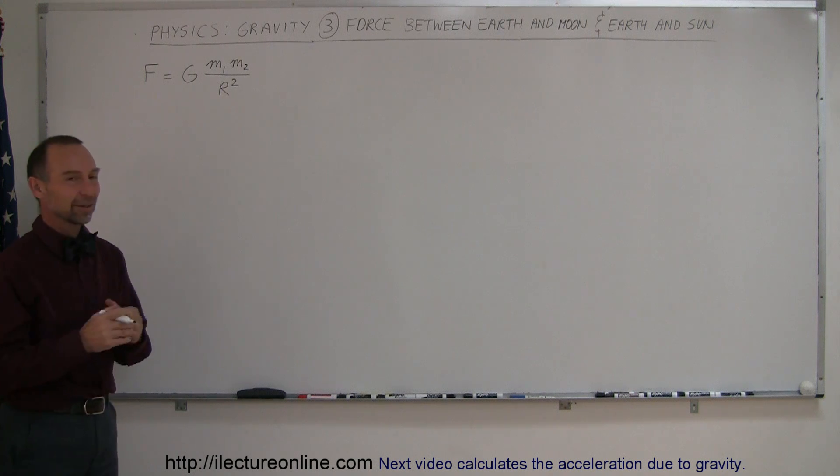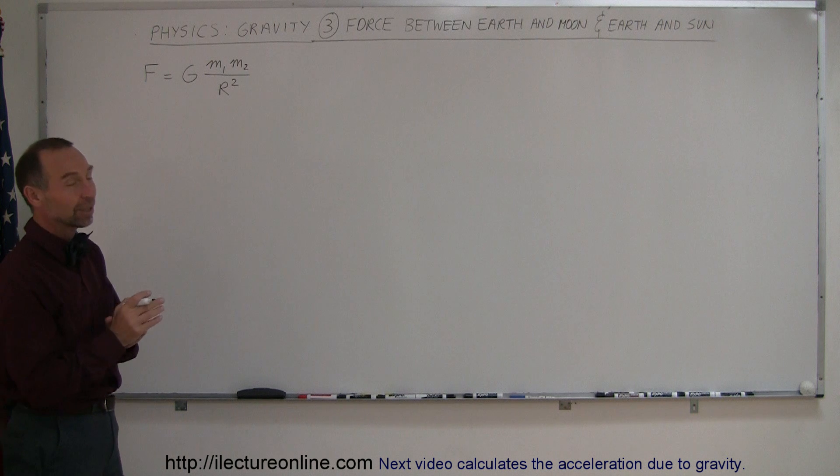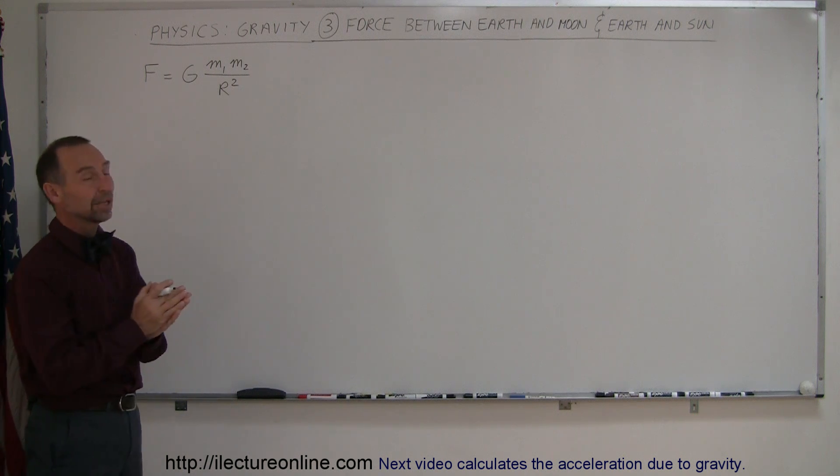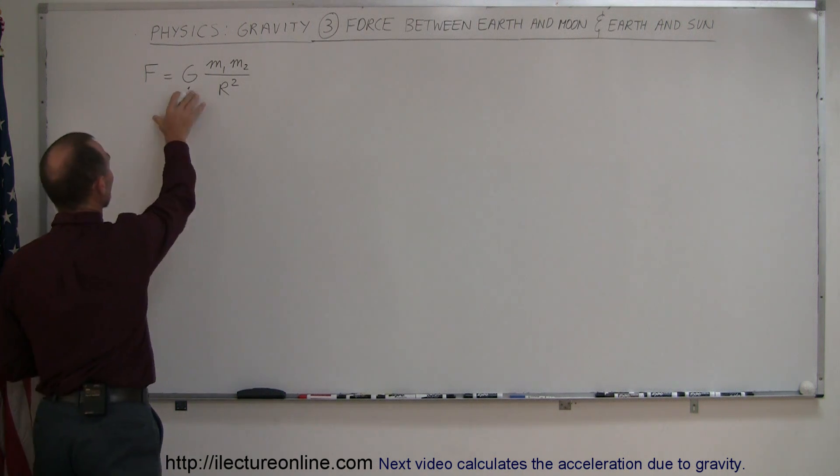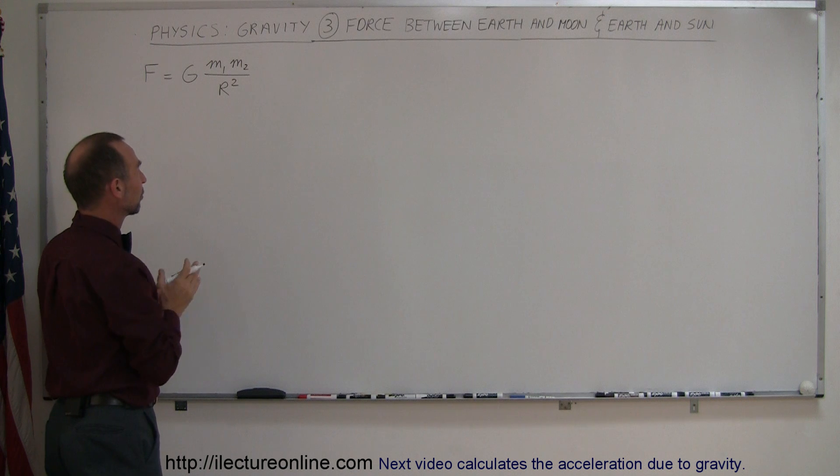To give us a little bit more understanding about the laws of physics regarding gravity, we're going to calculate the force between the Earth and the Moon and the force between the Earth and the Sun. Let's see what we end up with. Here's the equation: F equals G m₁ m₂ divided by the distance between them squared.